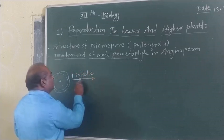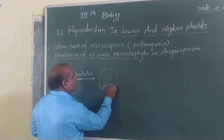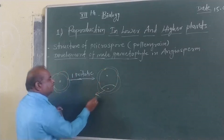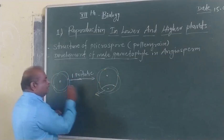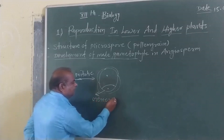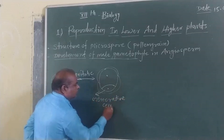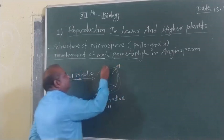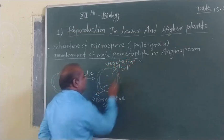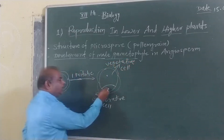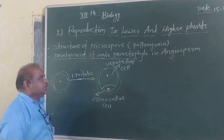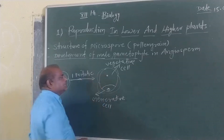As we know, the microspore or pollen grain undergoes the first mitotic division, resulting in a small cell and a larger cell. The small cell has a small nucleus which is irregular in shape. The larger vegetative cell has a spherical nucleus situated in the cytoplasm. The small cell is the generative cell and the larger cell is the vegetative cell.